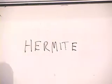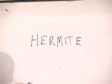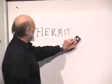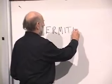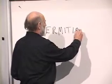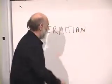Hermite is not a bug — it's the name of a mathematician. Hermitian is an adjective derived from the proper noun Hermite.